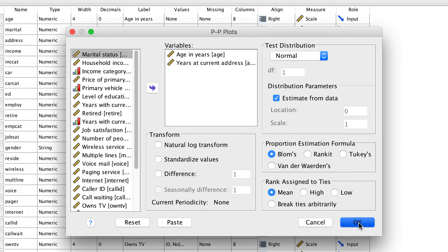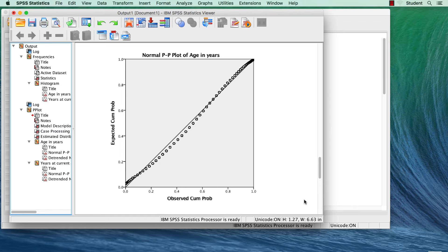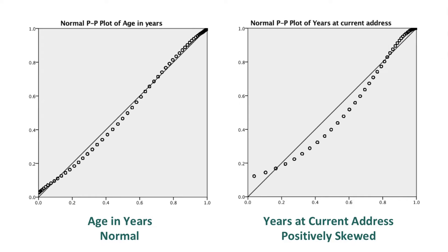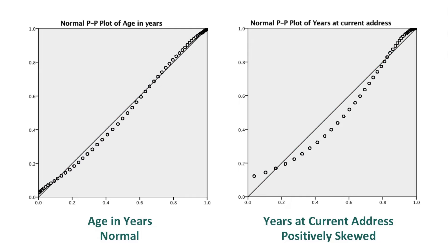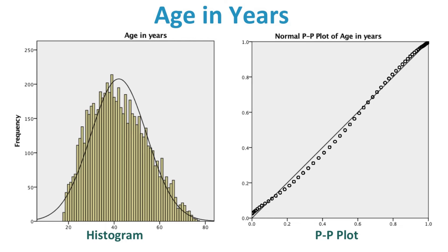Click OK. This is a percentile-percentile plot. If a distribution is normally distributed, the dots will all line up on a 45-degree line. You can see what happens with a roughly normally distributed distribution and a severely positively skewed distribution. For age, the dots are mostly right on the line. For years at current address, the dots veer off the line, particularly on the positive end. This helps illustrate the interaction between the histogram and the PP plot, and how both of them represent normality.